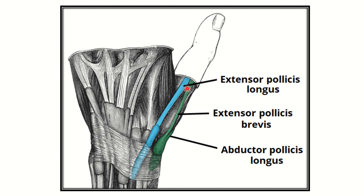Here we can see the anatomical snuffbox. On one side it is formed by the extensor pollicis longus, and on the other side there are two important tendons forming another boundary — the extensor pollicis brevis and abductor pollicis longus. These three important tendons form the two important boundaries.